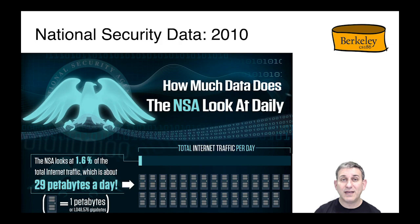Turning to national security — focusing on the United States — this infographic is from 2010, and even back then look at how much data the National Security Agency was looking at daily. At that time they were looking at 1.6% of total internet traffic, which was 26 petabytes a day. That's actually quite a lot, even by today's standards.